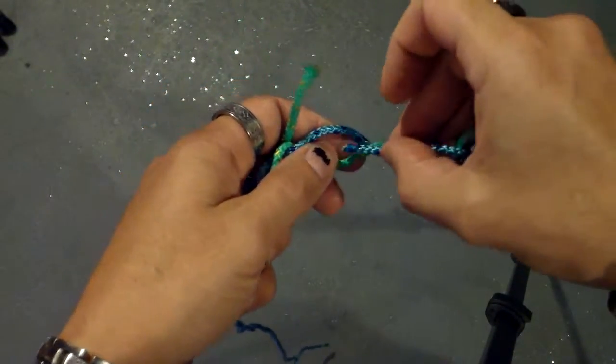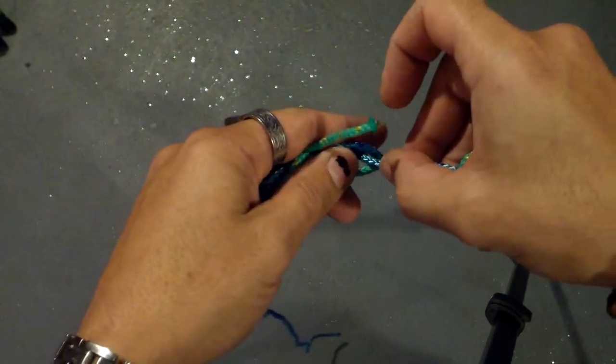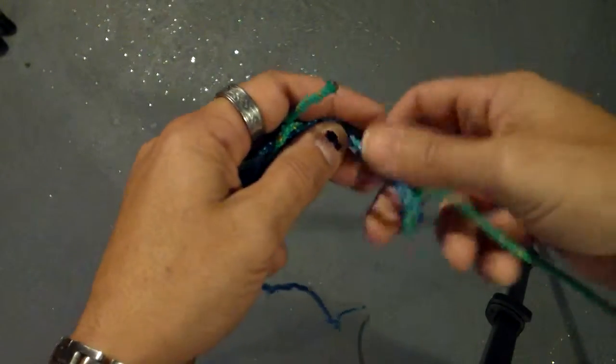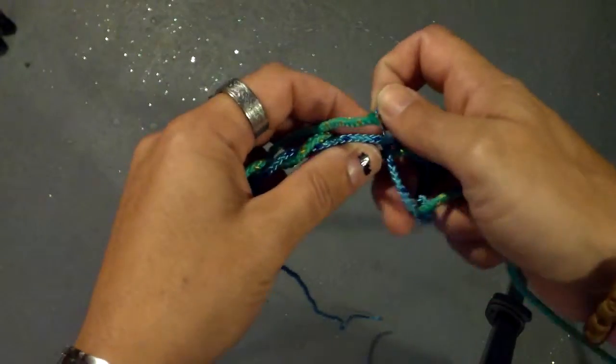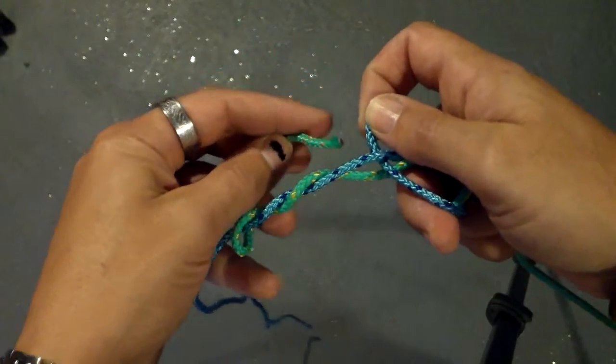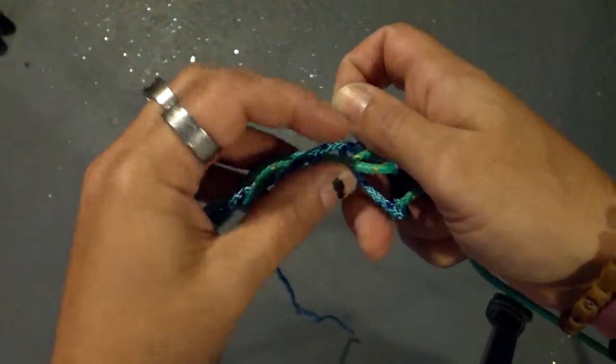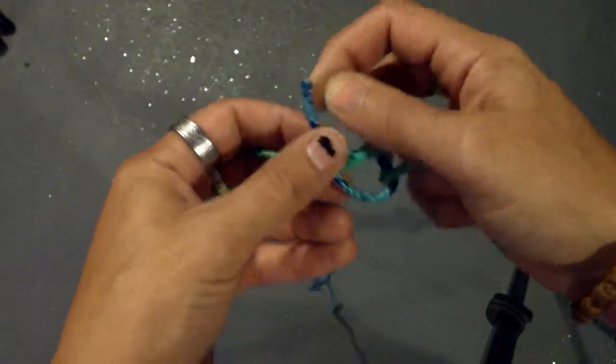You're going to take your tag end of your one line, go through the center. Then the tag end of your opposite line, you're going to go the opposite direction. So you're going out two different ways.